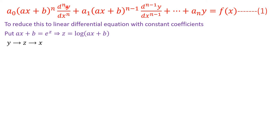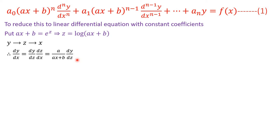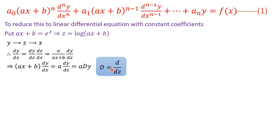The substitution is ax + b = e^z, which implies z = log(ax + b). Initially y is a function of x. After substituting for ax + b, we get the differential equation in terms of y and z, so y becomes a composite function of x. By the chain rule: dy/dx = (dy/dz)·(dz/dx) = (a/(ax+b))·(dy/dz), which implies (ax + b)·(dy/dx) = a·(dy/dz) = a·Dy, where D denotes d/dz.